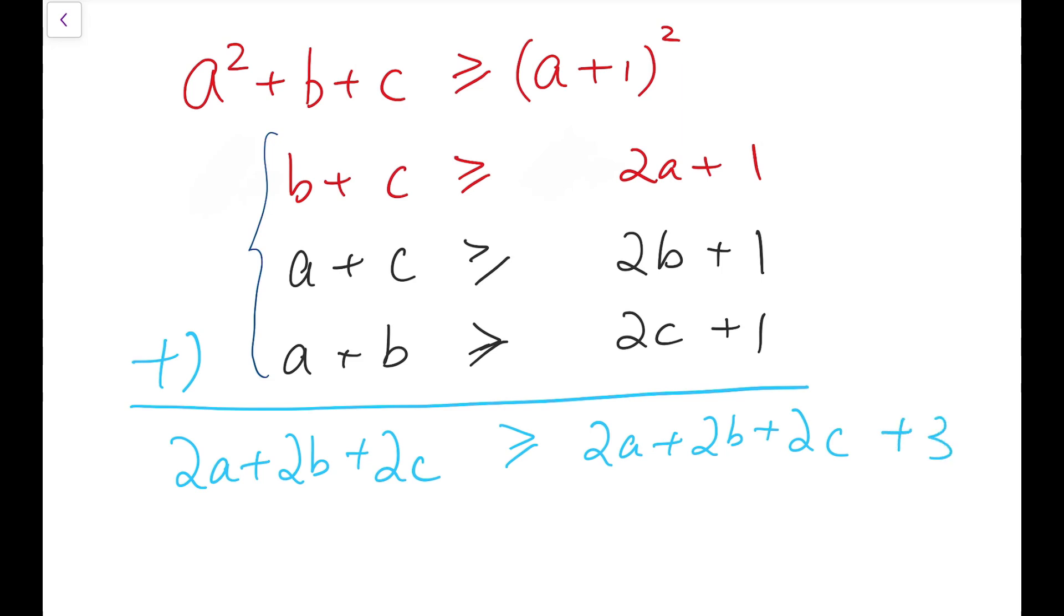which is three. But, this inequality is obviously impossible, because the right-hand side is clearly larger than the left-hand side by three. So now, we have a contradiction.